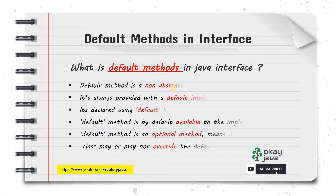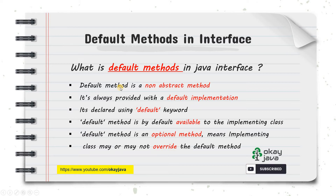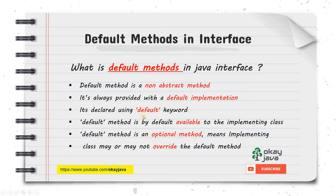So let's have a look at the definition. Default method has been introduced as part of Java 8. A default method is a non-abstract method — it will always have a default implementation. In an interface, you can write a method with a body, with its implementation, which was never possible before Java 8. You need to use the 'default' keyword right before your method signature to declare a function as a default method.